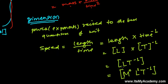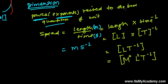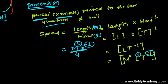Here M has power zero, L has power one, and T has power minus one. So the dimension of speed is zero in mass, one in length, and minus one in time. The unit of speed is meter per second — meter represents length with power one, and second represents time with power minus one.